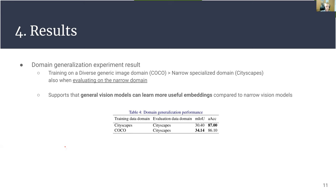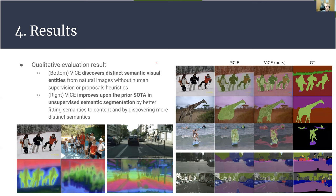We also performed a domain generalization experiment, finding that training the model on a large, diverse, generic image domain like COCO is better than training it on a narrow, specialized domain dataset like Cityscapes — even when evaluating on the narrow domain. This supports the general conclusion that general-domain models can learn more useful embeddings. We show a few examples of how our model discovers distinct semantic entities without any human supervision, and also demonstrate that our model improves the prior state of the art for unsupervised segmentation by better fitting content and discovering smaller details such as pedestrians.